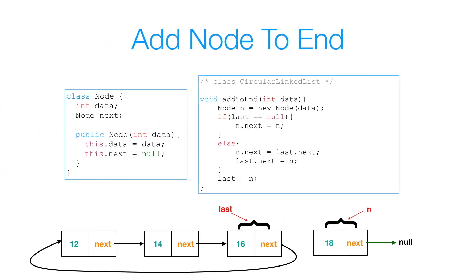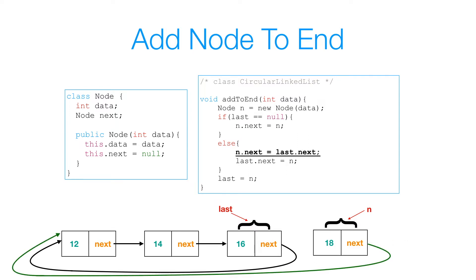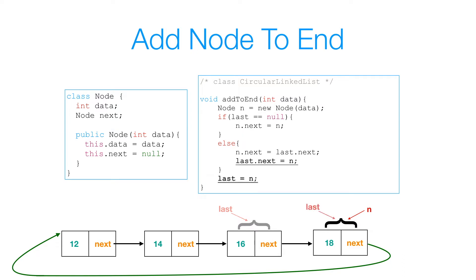Now let's add a node to the end of a list where we have some existing nodes. The first thing we do is set n.next to last.next. Then we set last.next to n. Since we want our last to reference the last node in the list, we set last to reference the same object n references. That's how we add a node to the end of an existing list.